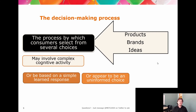Decision making always involves choices. The decision-making processes, in short summary, involve cognitive and affective activity. It can be complicated and rational with planning and detail, or it can be a simple learned response, or it can look like an uninformed trigger when it's actually a thought-out but fast process.